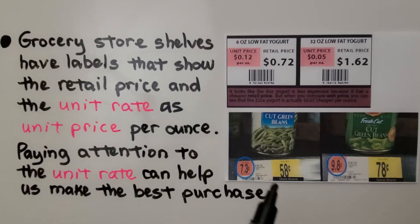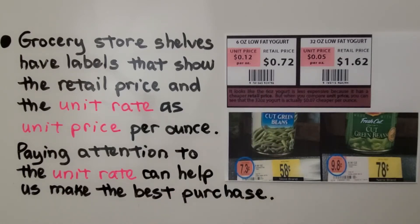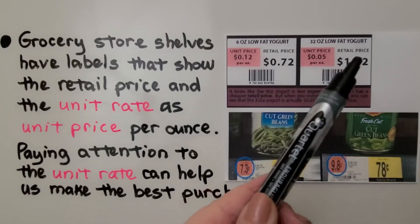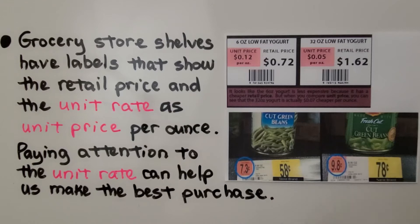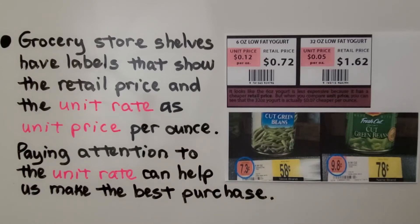If you look at the little labels right on the front of the shelf at a grocery store, you'll see unit prices. Grocery store shelves have labels that show the retail price, and a unit rate as a price per ounce or price per pound, depending on how big the container is. Paying attention to the unit rate can help us make the best purchase.